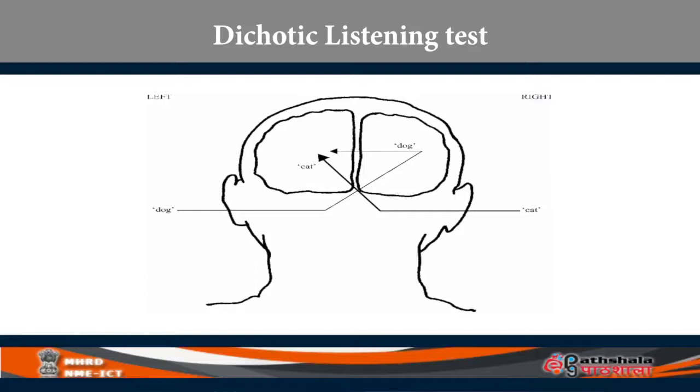Even if you are given 25 words to each ear, around 20 of the 25 words from the right ear can be reported correctly, whereas fewer of the words given to the left ear can be reported correctly. In other words, the dichotic listening test results in what is known as right ear advantage — most of the words given to the right ear are reported correctly. In the picture, the word 'cat' goes into the right ear and reaches the left hemisphere, so 'cat' is reported correctly. The word 'dog' is given to the left ear, goes first to the right hemisphere, and then must travel through the corpus callosum to the left hemisphere — the pathway is much longer. Because 80 percent of the fiber tracts crossover, most information given to the right ear goes to the left hemisphere, explaining the right ear advantage.